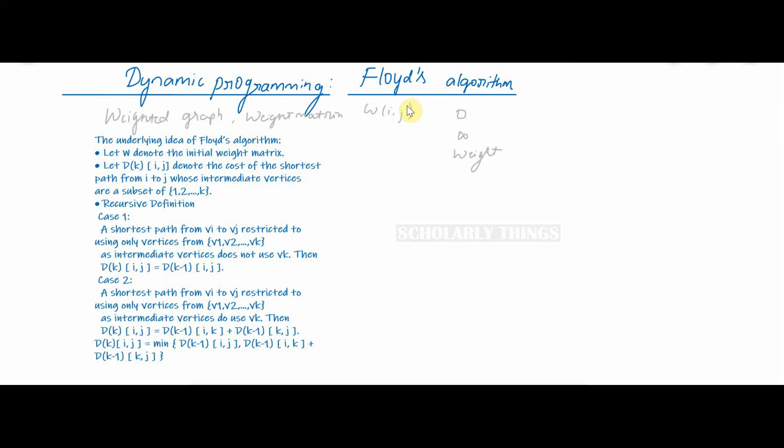Floyd's algorithm to find all pairs shortest paths. We need to know some of these definitions. What is a weighted graph? In this graph each edge has a weight or an associated numerical value. Edge weight may represent costs, distance or lengths, capacities and so on depending on the problem.